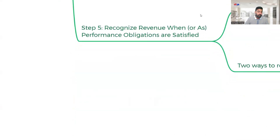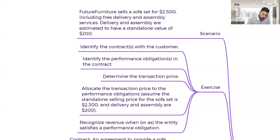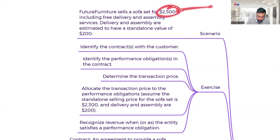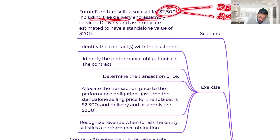Let me take a simple example so you can easily understand the whole process and how we bifurcate revenue as per the performance obligations. Future Furniture sells a sofa set for rupees 2,500. In this, the sofa set itself is worth rupees 2,300, and rupees 200 is for delivery and assembly. So in this one contract, we have two performance obligations.